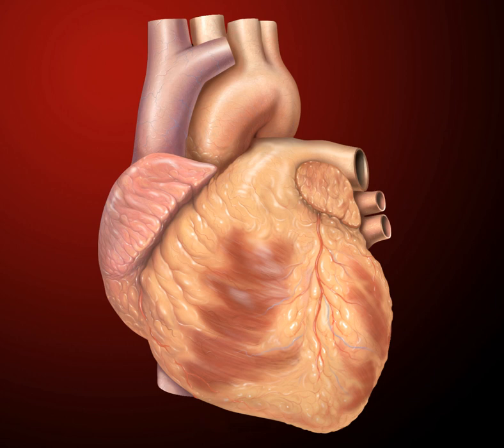In Egyptian religion, the heart was the key to the afterlife. It was conceived as surviving death in the netherworld, where it gave evidence for or against its possessor. It was thought that the heart was examined by Anubis and a variety of deities during the weighing of the heart ceremony.